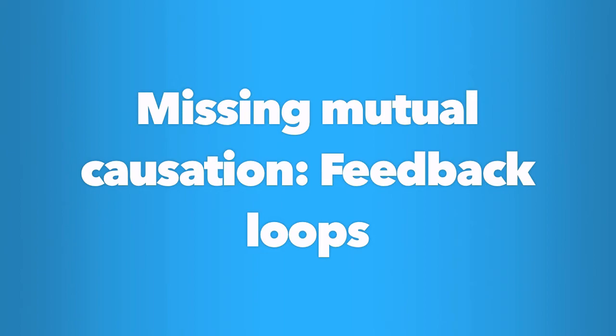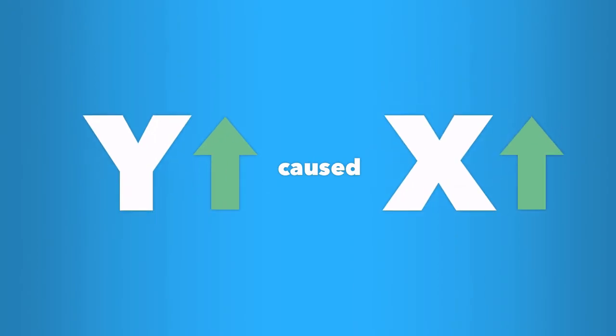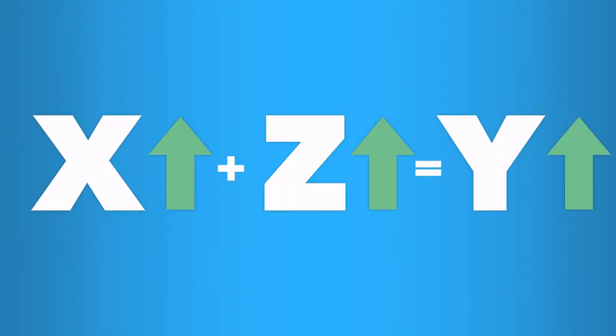Missing mutual causation. Feedback loops. So, we've established a range of possible relationships between two factors, X and Y. It may be true that X causes Y. The reverse may be true. Y causes X. Or, both may be false, and in fact, Z causes both X and Y. Maybe X causes Y, but only if Z is also present. There is another possibility that is often missed. Have you ever heard the phrase, feedback loop?